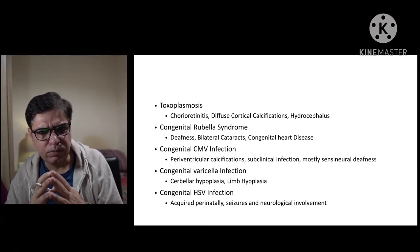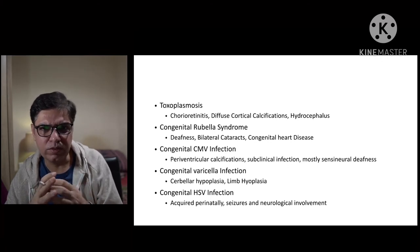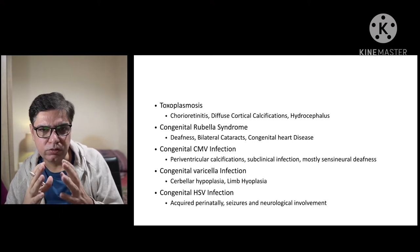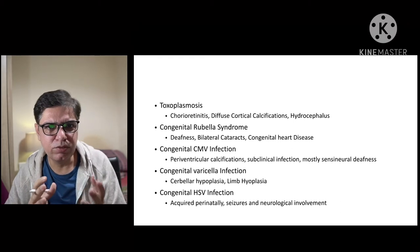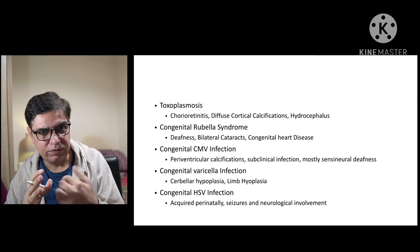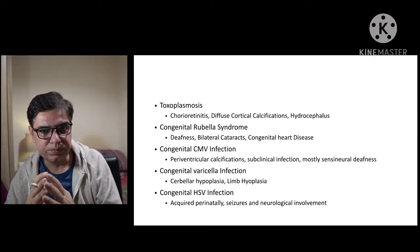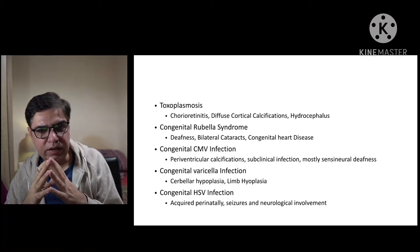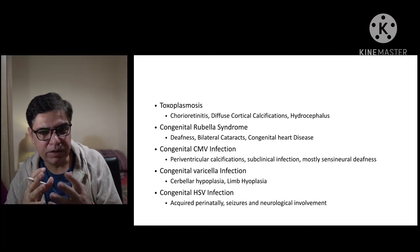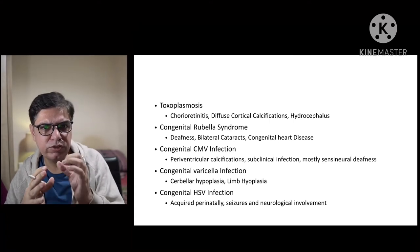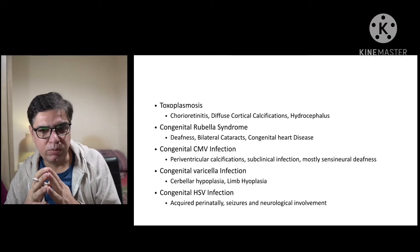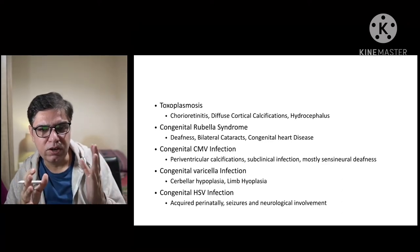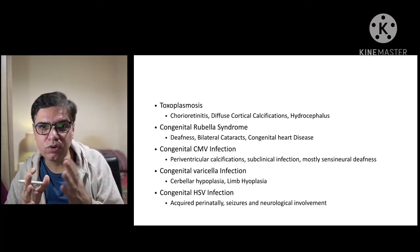Congenital rubella syndrome is not very common in the developed world due to MMR vaccination, but is still quite common in developing countries, particularly in the subtropics, tropics, and South Asia. The mother may experience only mild fever, slight rash, and bony pains. If the virus crosses the placenta and infects the fetus, the baby is born with sensorineural deafness, bilateral cataracts, and congenital heart disease — either a patent ductus arteriosus, pulmonary stenosis, or peripheral pulmonary stenosis. This triad is very characteristic of congenital rubella syndrome.